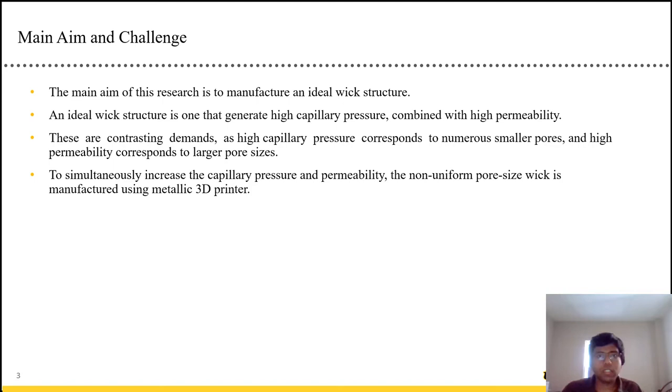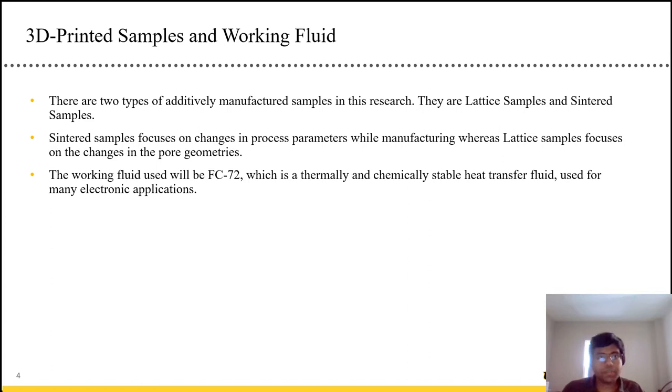The main goal of this research is to manufacture an ideal wick structure. And these wick structures have two properties, which is high permeability and high capillary pressure. But these are contrasting traits because high capillary pressure means smaller pore sizes, high permeability means bigger pore sizes. And so, to achieve them both, we make a non-uniform pore size wick structure using a metallic 3D printer.